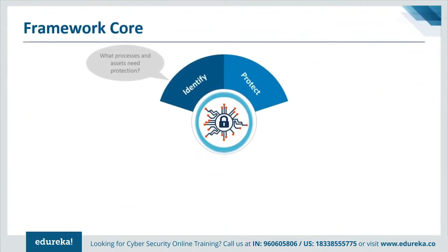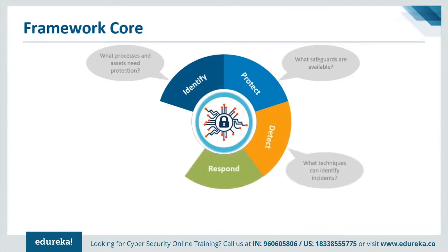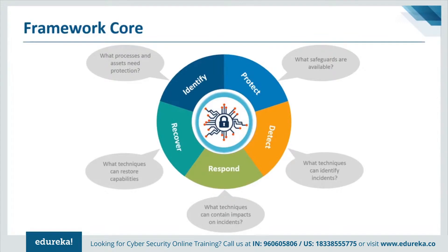The core is a set of desired cybersecurity activities and outcomes organized into categories and aligned to informative references. The framework core is designed to be intuitive and to act as a translation layer to enable communication between multi-disciplinary teams using simplistic and non-technical language. The core consists of three parts: functions, categories, and subcategories. It includes five high-level functions: Identify, Protect, Detect, Respond, and Recover. These five functions are not only applicable to cybersecurity risk management but also to risk management as a whole.